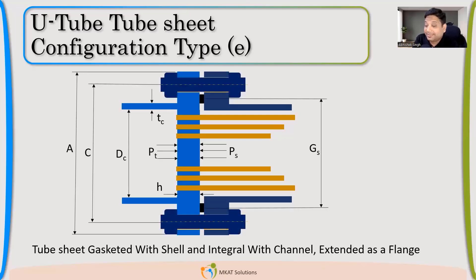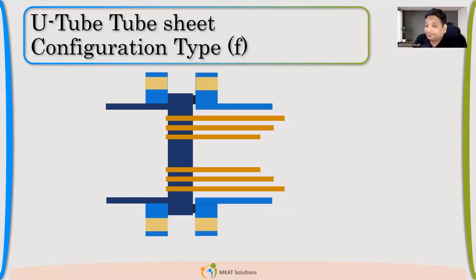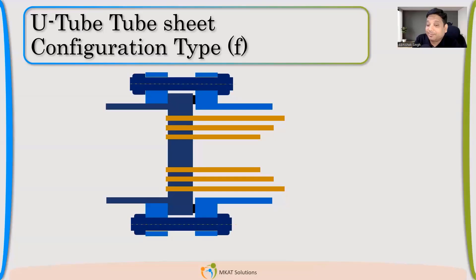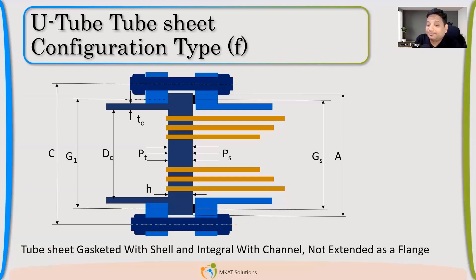Now E type — going in the opposite direction. The tube sheet is integral with the channel. This may be a one-pass configuration with no partition plate, but we are studying the configuration. So integral with channel — if I say tube sheet integral with channel, you should be able to draw this configuration knowing that integral means welded. This is Type E. Now F is opposite to C, where the tube sheet is integral with the channel but there is a lap-type flange, so it will be bolted. This is F type.